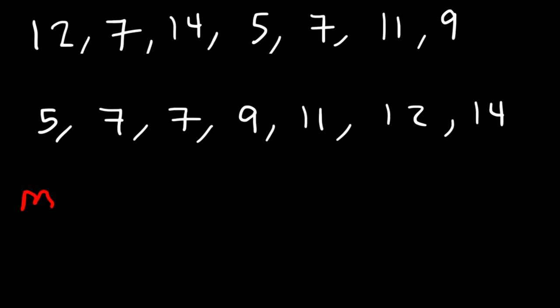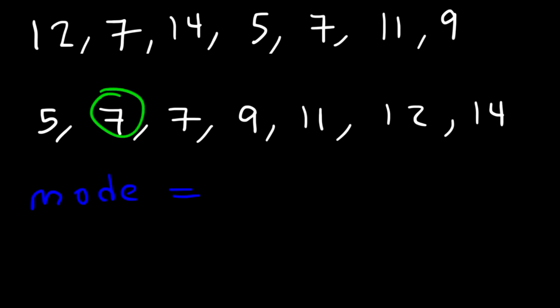Now what about the mode? The mode is simply the number that appears most often, or the number with the highest frequency. Every number appears once except 7 — 7 appears twice. So the mode is equal to 7.